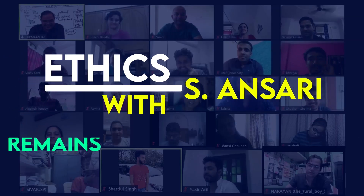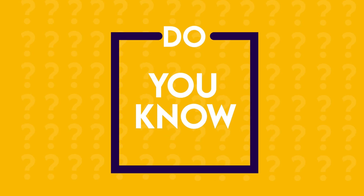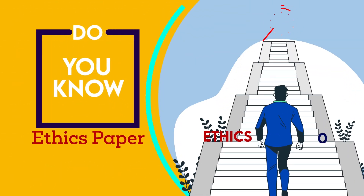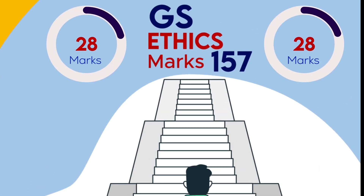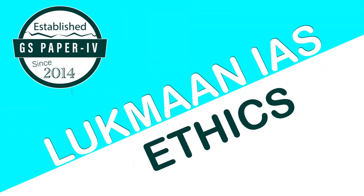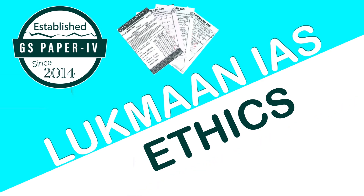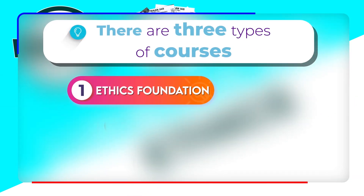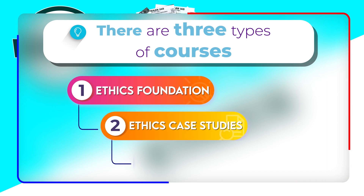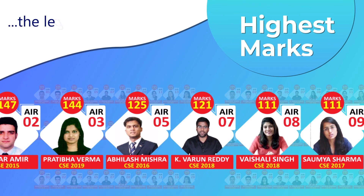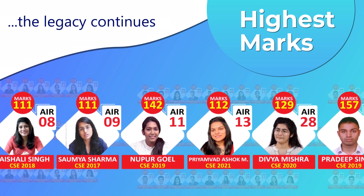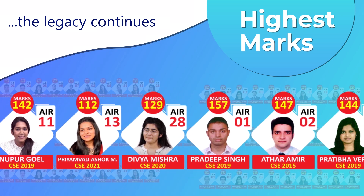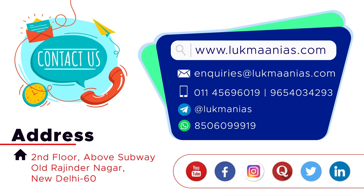Ethics with S. Ansari remains the best ever choice. Do you know that ethics paper is the only paper in general studies that pays more with less efforts? One can easily secure 130 to 140 marks. Lukman IAS is a well-established name since 2014. We offer three types of courses: ethics foundation course, ethics case studies, and ethics test series. Since 2015, Lukman IAS students have maintained the records of securing the highest marks. Contact us today for more information.